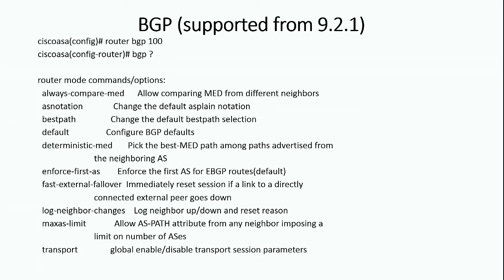BGP was supported from version 9.2.1 on ASA. The way to start is similar to how we do it on a router — it's 'router BGP', but it is not a process ID, it's the autonomous system number. So it is 'router BGP 100'. Once you go under that, the different options available are listed here.